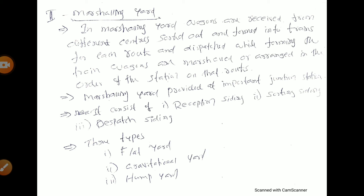The wagons are arranged in the order of the stations on that route. When the train stops at one station, the corresponding wagons are detached at that station. This is called a marshalling yard. A marshalling yard is provided at important junctions. It consists of reception sidings, sorting sidings, and dispatch sidings. The three types of marshalling yards are flat yard, gravitational yard, and hump yard.